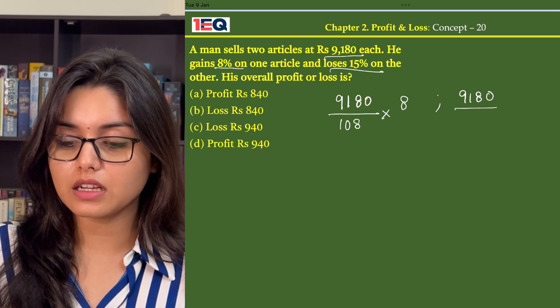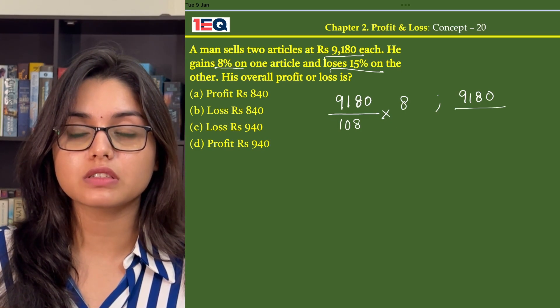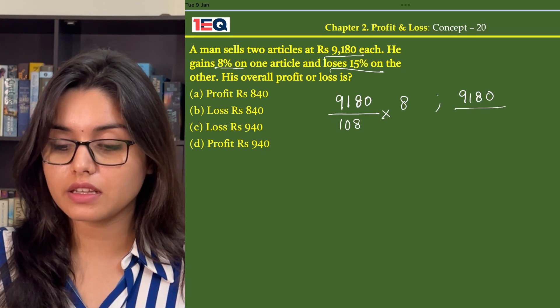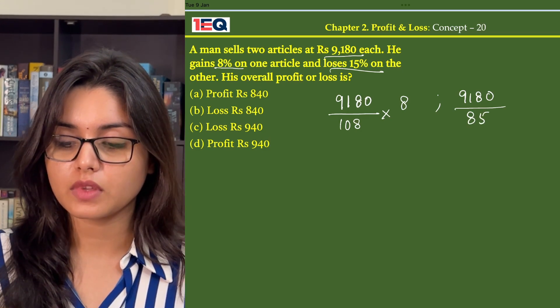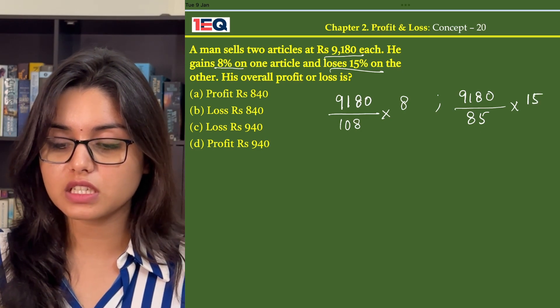In case of the second article, he is selling it at 15% loss. That means he is selling it at 85 and so he is incurring a loss of 15.